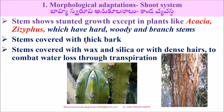The stem shows stunted growth except in plants like Acacia and Casuarina, which have hard, woody, and branched stems. The stem is covered with thick bark, and also covered with wax and silica. The stem is also covered with dense hairs.